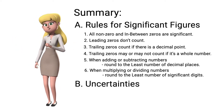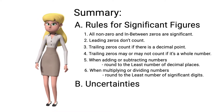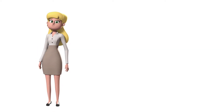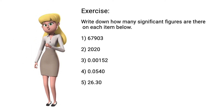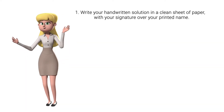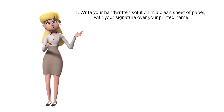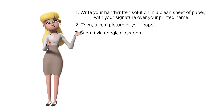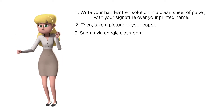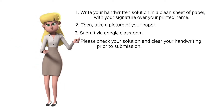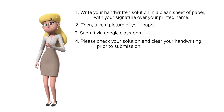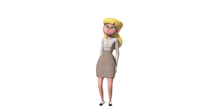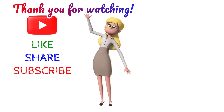Lastly, we add uncertainties to give validity to the data, so we can check if the measurement is accurate, precise, or both. For your problem exercise, write down how many significant figures are on each item below, with your handwritten solution on a clean sheet of paper with your signature over your printed name. Take a picture and submit via Google Classroom. Deadline is posted in your respective Google Classroom classes. Please check your solution and clear your handwriting prior to submission. Thank you, and see you in our next video. If you liked our video, please hit like, share, and subscribe.